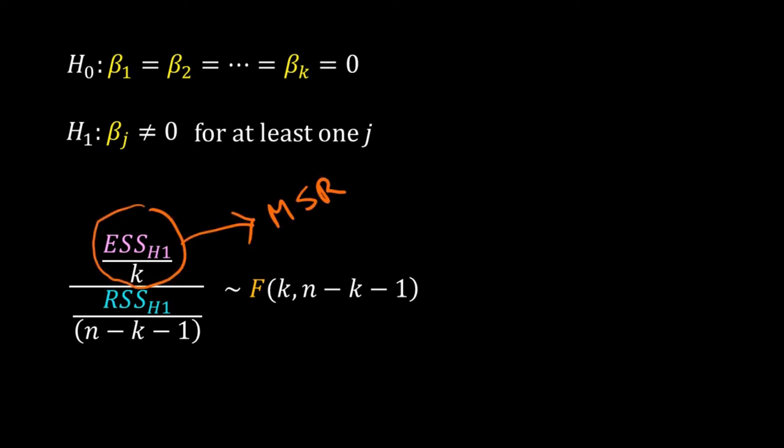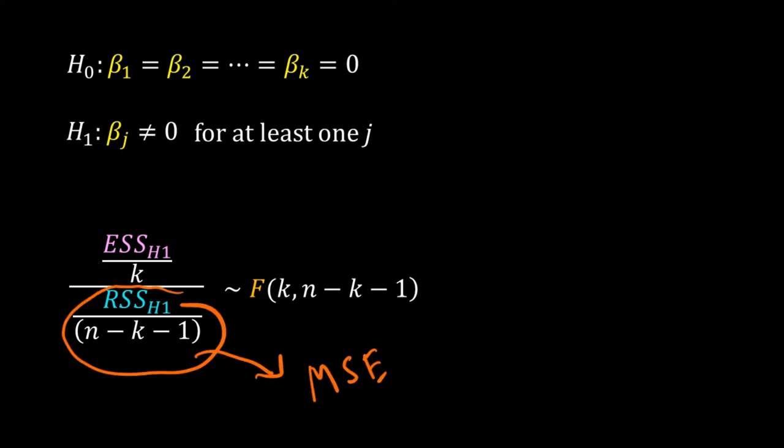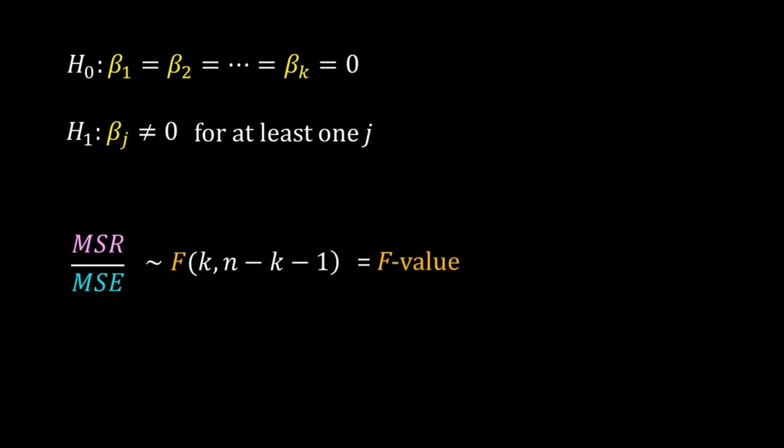ESS divided by its degree of freedom is called the Mean Sum of Squares due to Regression, written as MSR. RSS divided by its degree of freedom is called the Mean Sum of Squares of Error, or MSE. So now we have MSR divided by MSE — this is called the F statistic, or F value.